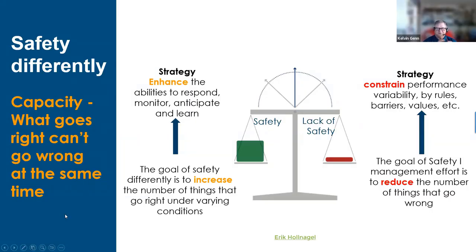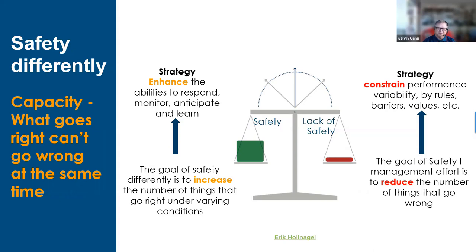What Hollnagel then started to shape up was thinking differently about what's going right and what's going wrong. Thinking about capacity is: if it's going right, then it can't be going wrong at the same time. Our approach to reducing things gone wrong had been a model of constraint — controls put in place by rules, barriers, culture and behaviour. But in Hollnagel's model about capacity, you think on the other side of the equation: how you enhance the abilities to respond, monitor, anticipate and learn. Increasing the number of things going right is about creating this capacity space.